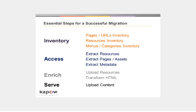These are the steps to Kapow's content migration process. First, a database inventory of all the URLs that make up the site will be created. A robot will crawl the website and collect all the URLs of all the HTML pages, along with the URLs of all of the resources, including images and other binary files.